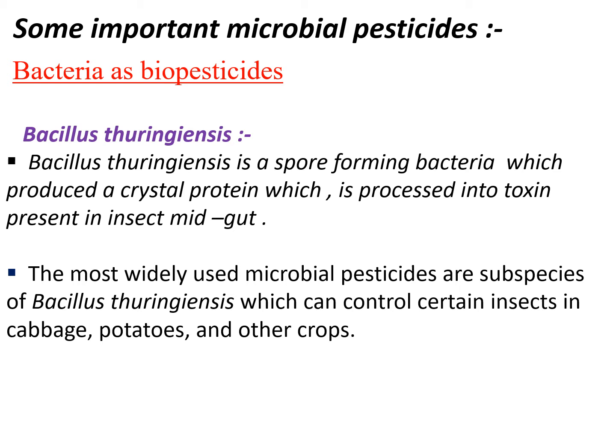In bacterial biopesticides, take the example of Bacillus thuringiensis. Bacillus thuringiensis is widely distributed in nature, present in soil and litter, and produces several toxins which may be endotoxins and exotoxins. The exotoxins contain adenine, glucose and ribose. Bacillus thuringiensis is a spore-forming bacteria which produces a crystal protein that is processed into a toxin present in the insect midgut. The widely used microbial pesticides are subspecies of Bacillus thuringiensis, which can control certain insects in cabbage, potatoes and other crops.